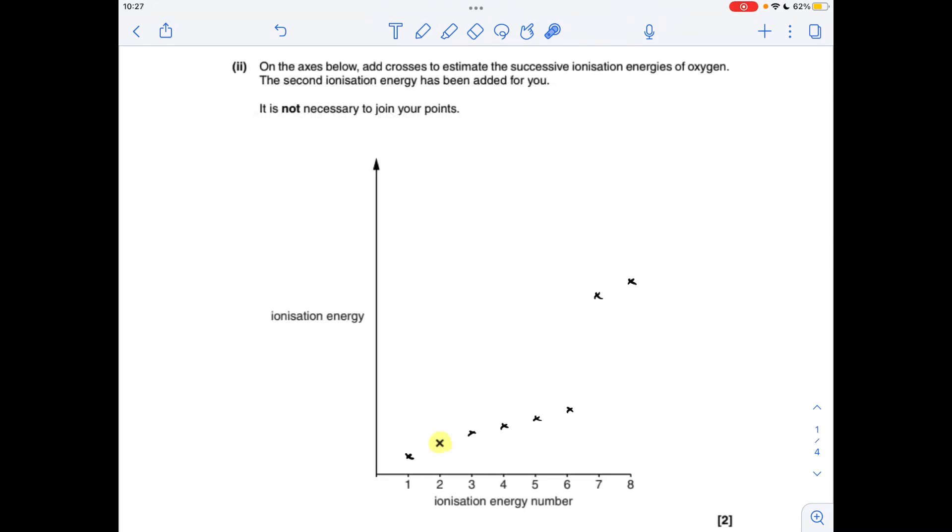Next part we've got to put the missing ionisation energies in so that was the one that was given so the first ionisation energy will be slightly less than that and then the successive ones up to the sixth one. Remember these electrons are all in the outer shell so there's a gradual increase and then to get the seventh electron out we've broken into a new shell close to the nucleus so there's a jump up in energy and then obviously the eighth needs to be higher than the seventh.